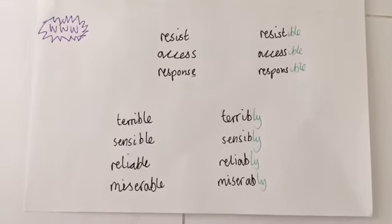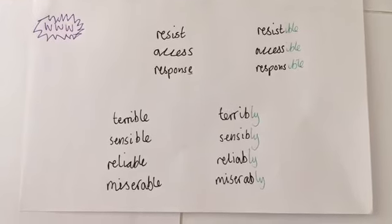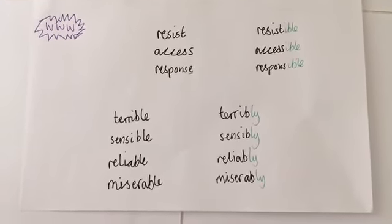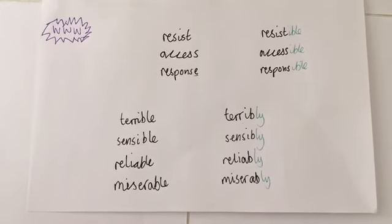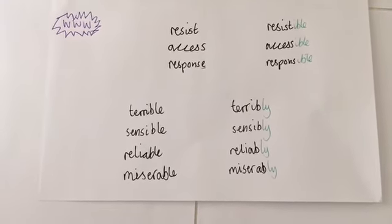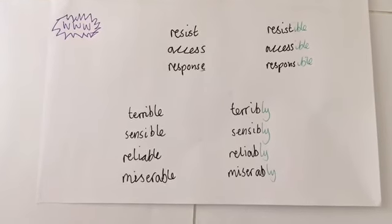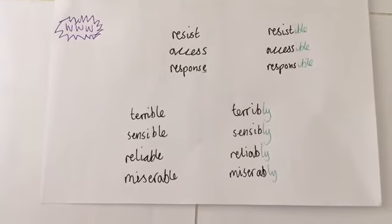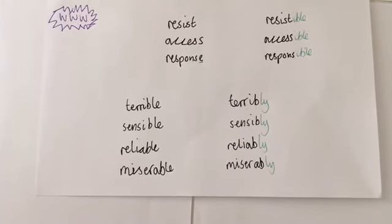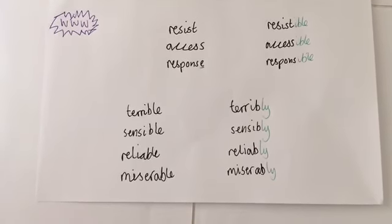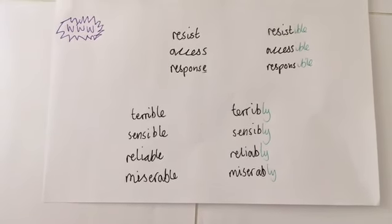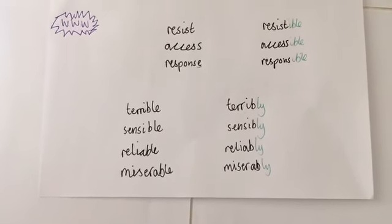You can also see with the word 'response' that we drop the final 'e' before adding -ible. Finally, we can change these into adverbs: 'terrible' becomes 'terribly', 'sensible' becomes 'sensibly', 'reliable' becomes 'reliably', and 'miserable' becomes 'miserably'. In both -ible and -able cases, you drop the -le at the end and add -ly.